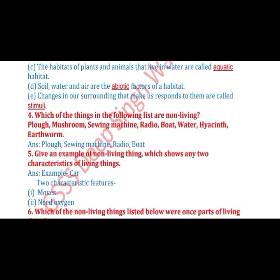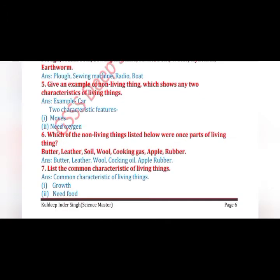Our fourth question: which of the following things are non-living? The answer is: plow, sewing machine, radio, and boat. Our fifth question: give an example of a non-living thing which shows any two characteristics of living things. The example is a car — it shows two characteristics: number one, movement; number two, it needs fuel (oxygen).